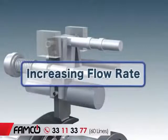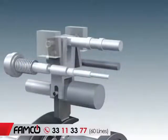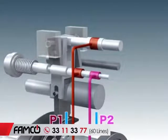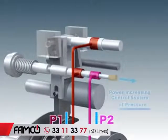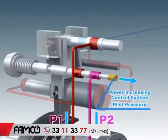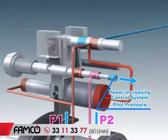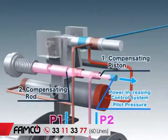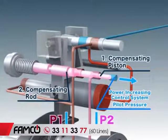Next, we will explain how the regulator increases the flow rate. When the delivery pressure of the pump, P1, or of a companion pump, P2, decreases, or when the pilot pressure is released by the power increasing control system, the compensation rod and piston are pushed back by their springs.